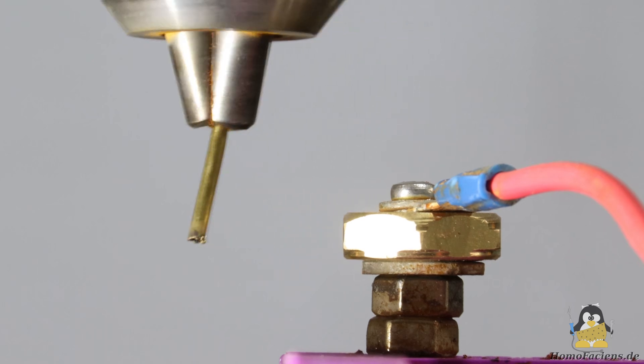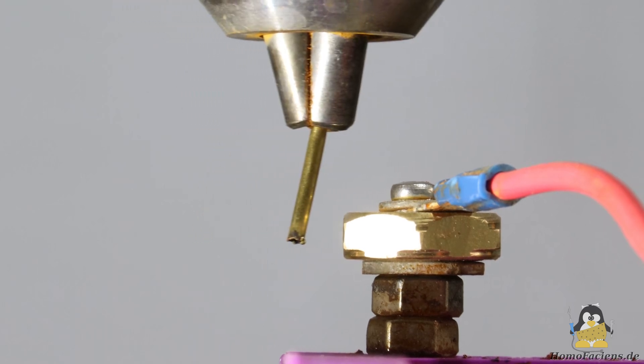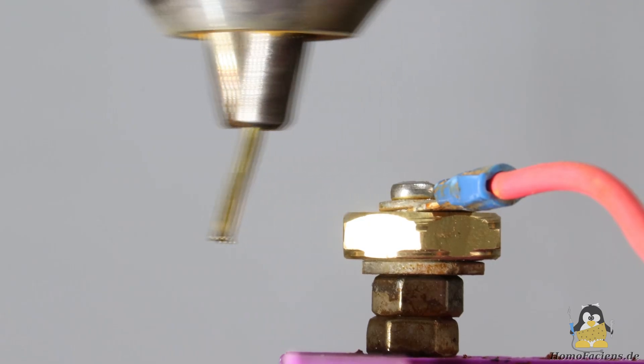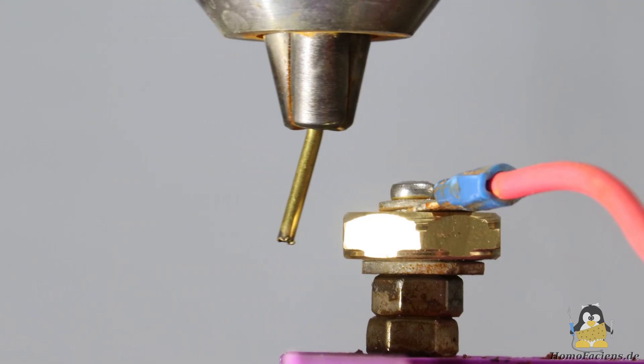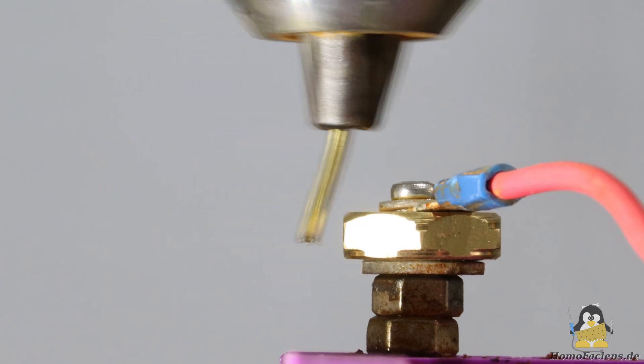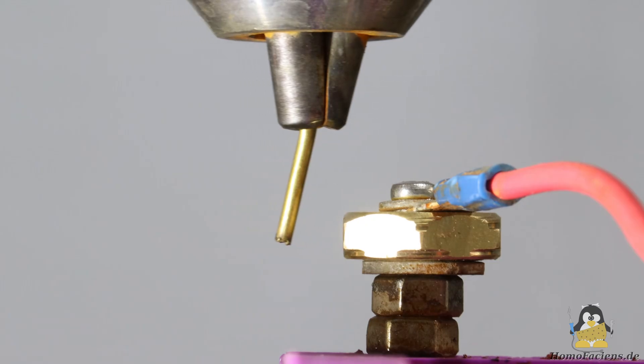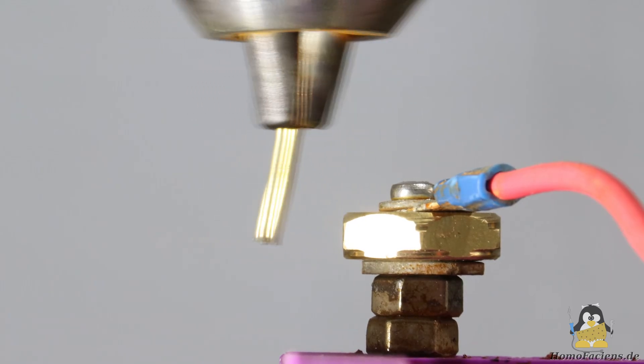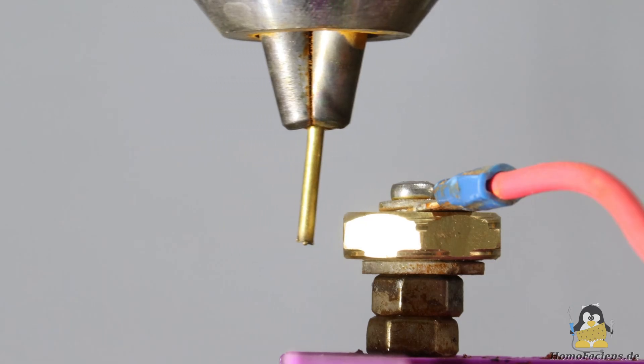Since I use the stepper motor to drive the drill chuck, my first idea was to at least partially compensate for the wobble by software. To do this, one pin on the microcontroller is configured as digital input and connected to the electrode via the servo switch. The runout can now be measured at a reference point, which I demonstrate here with an intentionally bent electrode.